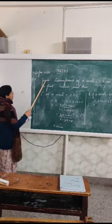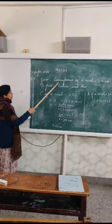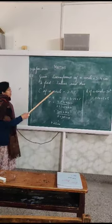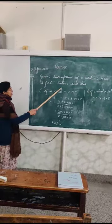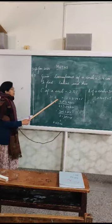So, first of all, you write down what is given: the circumference of the circle, and what you have to find: the radius and area of the circle.